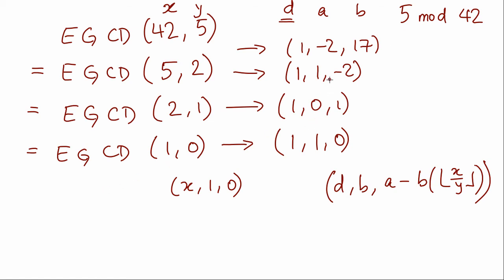Now from this algorithm, the three values that we have finally managed to return are 1, 2, and minus 17. And this algorithm tells us that we can express the numbers d, a, and b in the following form: we can write d equals ax plus by with this x and this y.